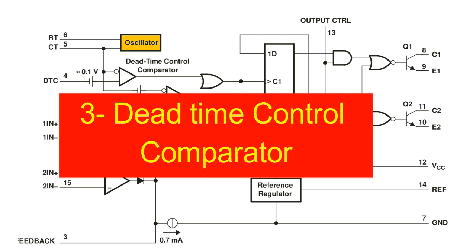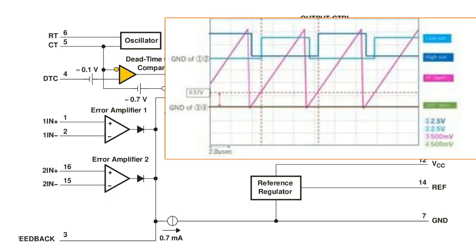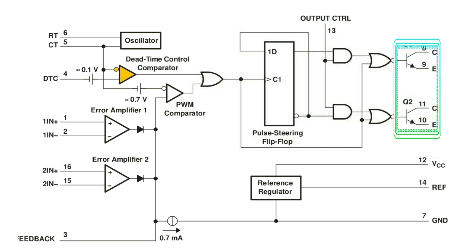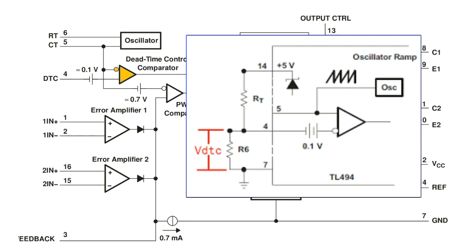Dead time control comparator: the dead time or simply off time control provides the minimum dead time or off time. The output of the dead time comparator blocks switching transistors when the voltage at the input is greater than the ramp voltage of the oscillator. Applying a voltage to the DTC pin can impose additional dead time, thus providing additional dead time from its minimum of 3% to 100% as the input voltage varies from 0 to 3V. In simple terms, we can change the duty cycle of the output wave without tweaking the error amplifiers.